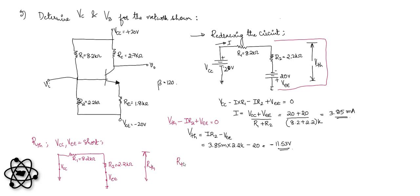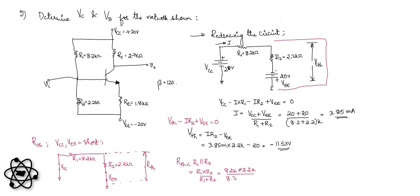Measuring across these two points, R1 appears in parallel with R2. So R_Thevenian equals R1·R2 divided by (R1 plus R2), giving 8.2 kilohms parallel with 2.2 kilohms, which equals 1.73 kilohms.